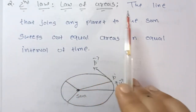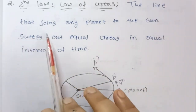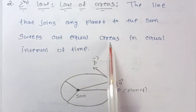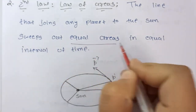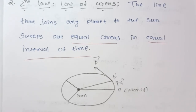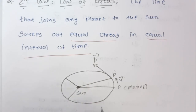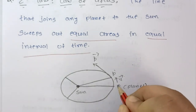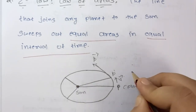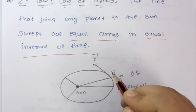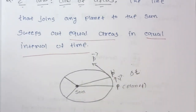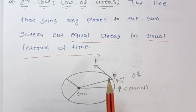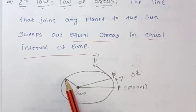The second law is also called the law of areas. It states that the line joining any planet to the Sun sweeps out equal areas in equal intervals of time. Let us understand this statement. This is the elliptical path followed by any planet, and the Sun is at one of the foci. At any time instant, the planet is at point P, and after time ΔT it reaches point P-dash.